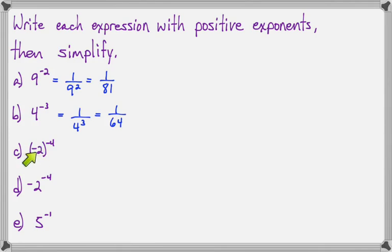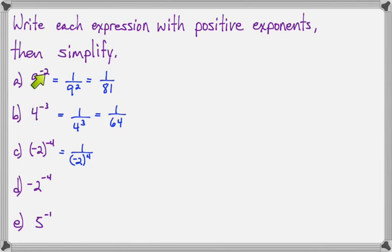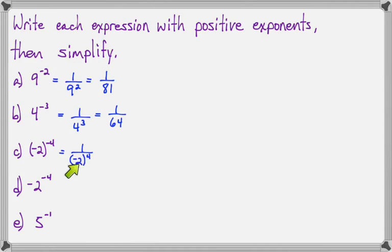On part C, we have a negative base for the first time, and I want you to notice that when we move this to the denominator, the negative 4 becomes positive 4, but the base stays the same. That makes sense, because when we move the factor to the denominator, the exponent changes sign, but the base does not. So here we expect the exponent to change sign, but the base should not. Now I have 1 over negative 2 in parentheses to the 4th power. Negative 2 to the 4th will be a positive number — it will be 1 over positive 16.